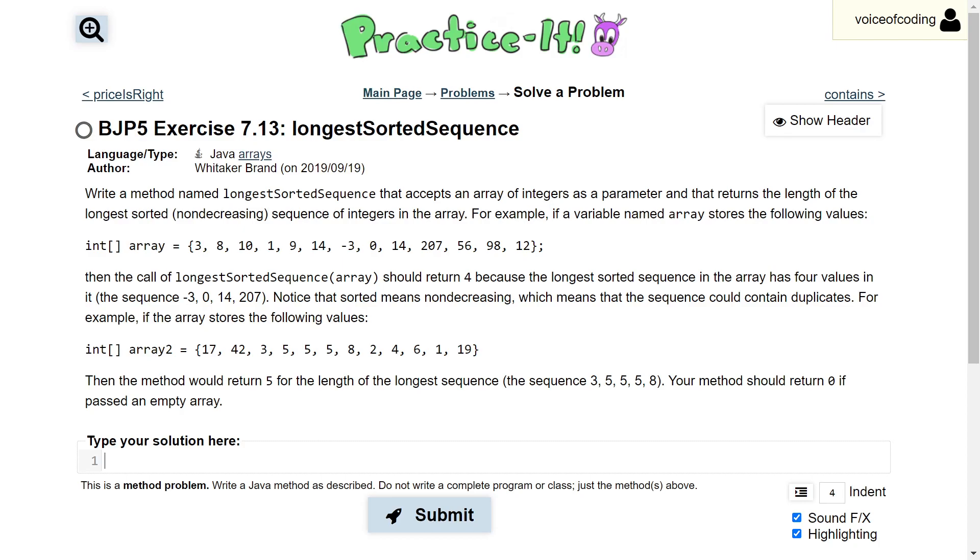then the call of Longest Sorted Sequence array should return 4 because the longest sorted sequence in the array has 4 values in it. The sequence: negative 3, 0, 14, 207.